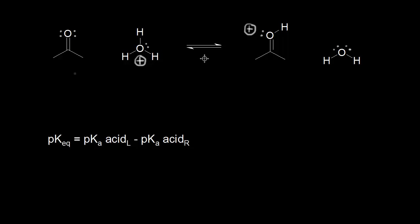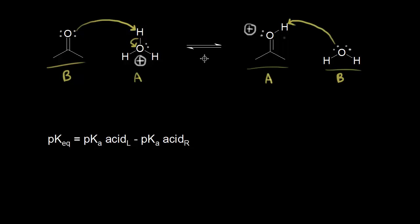Here's another organic acid-base mechanism. Acetone on the left functions as a base and takes a proton from H3O+ (hydronium), leaving these electrons behind on the oxygen — so hydronium functions as an acid. Protonating acetone gives its conjugate acid, and removing H+ from hydronium gives water, the conjugate base of H3O+. For the reverse reaction, water functions as a base, takes this proton, leaving these electrons behind, giving back acetone and forming hydronium.